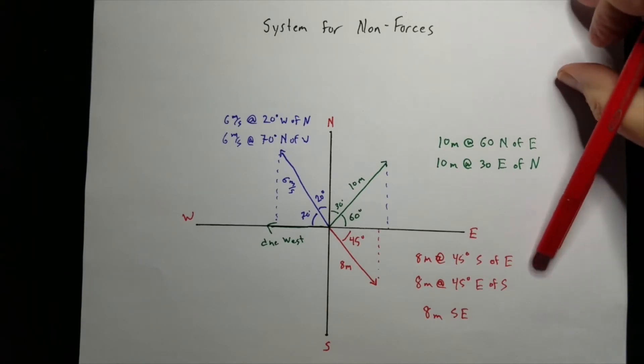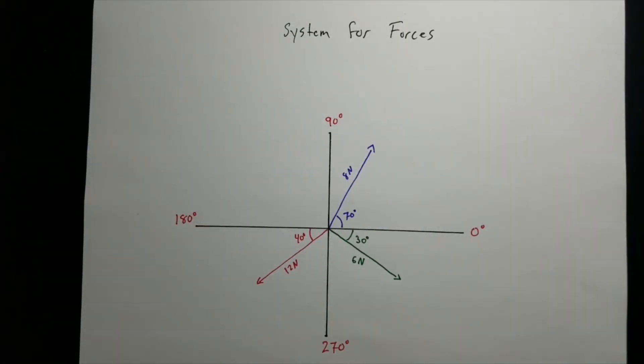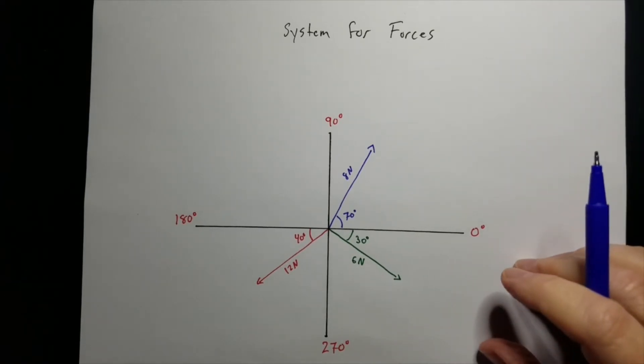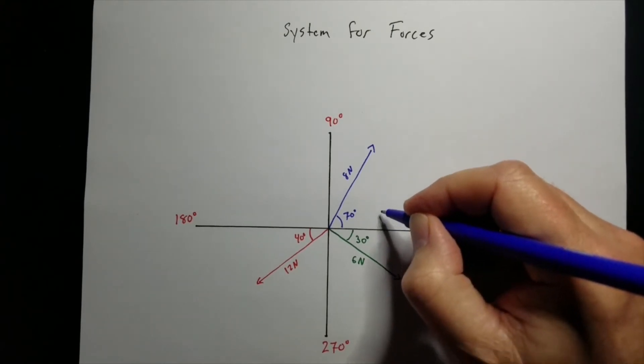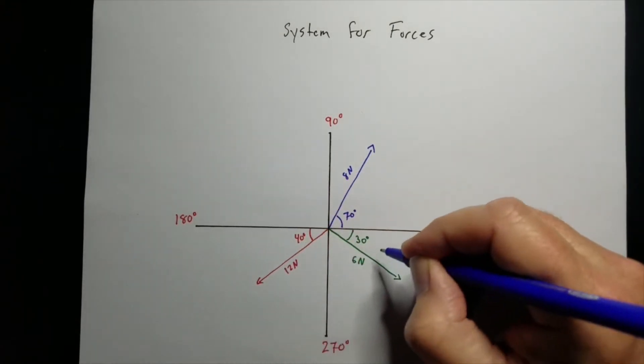Let's take a look at forces. Forces use a slightly different method. And where for non-forces there was two ways to name a vector for it. For forces, there's really only one. We always start off at 0 degrees and go around counter-clockwise until we get to the vector.